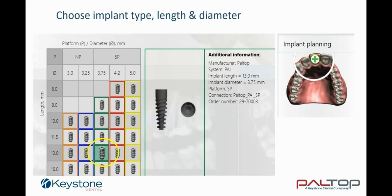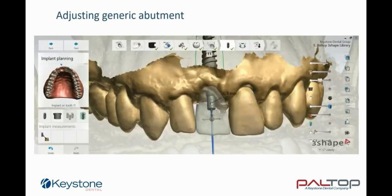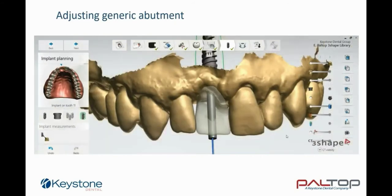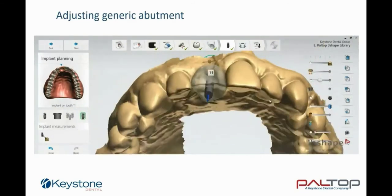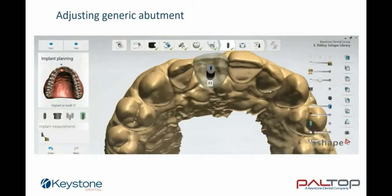Additional information such as implant type (in this case Pi), length, diameter, platform size (in this case standard platform), and order number will be visible. In this case, a screw-retained crown is required. Through lengthening of the generic abutment, the position of the screw axis channel can be seen in relationship to the virtual crown and the opposing arch. Here we see the screw axis channel in the area of the cingulum of the crown.